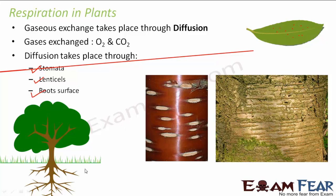Gaseous exchange also happens through the root surface, especially through the root hairs. The root hairs are in direct contact with the soil, and the soil is also enriched with gases like oxygen. Since root hairs are in direct contact with the oxygen in soil, diffusion of oxygen can take place across the root hairs. However, most of the gaseous exchange happens through stomata.